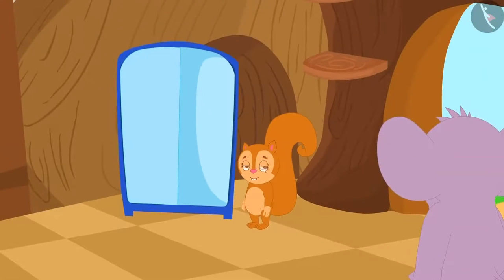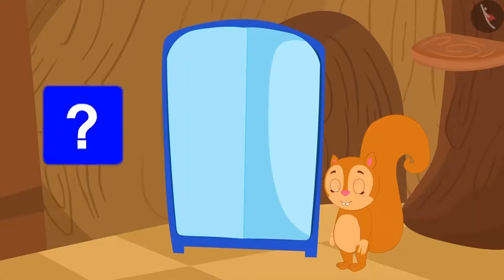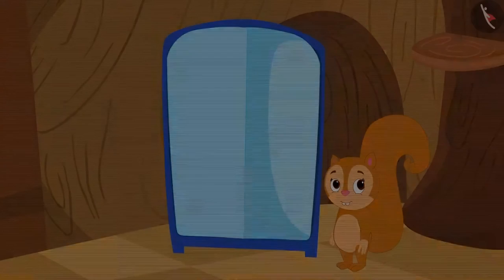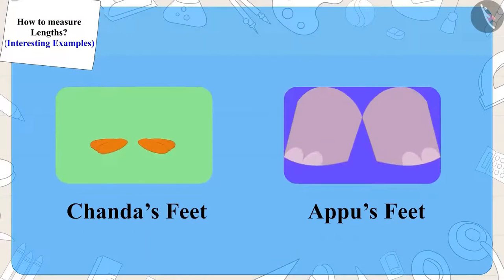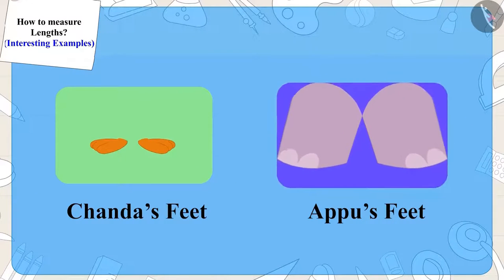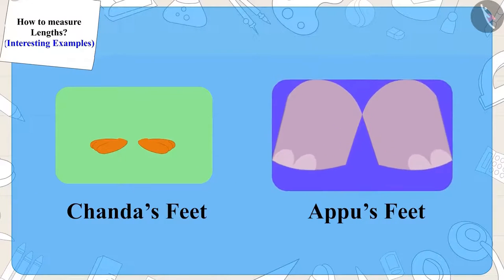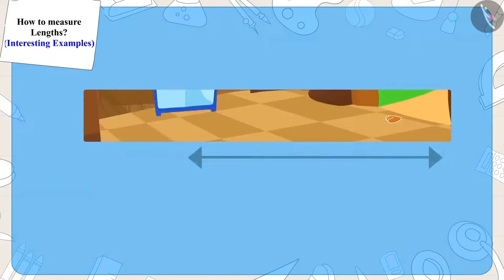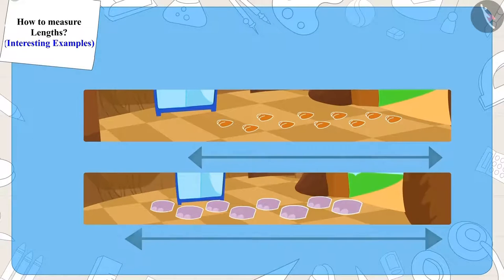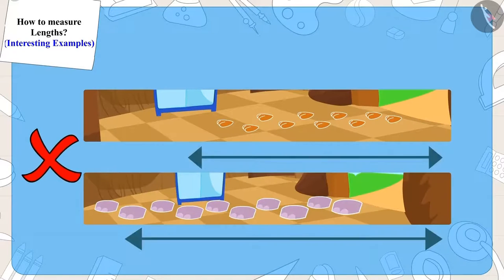Children, can you say why this happened? Actually, Chanda's feet are too small and Appu's feet are too big. This is the reason why the distance measured by Chanda — ten steps — and Appu's ten steps are not the same.